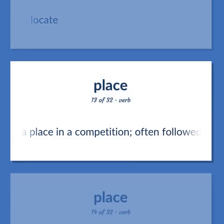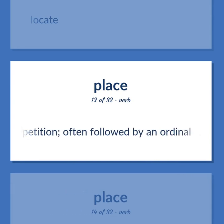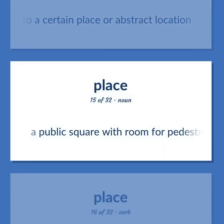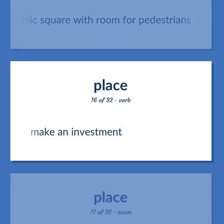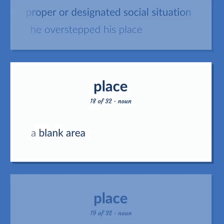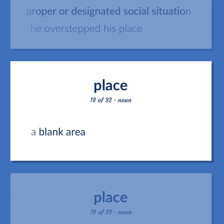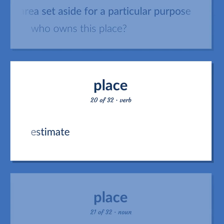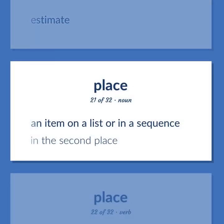Take a place in a competition, often followed by an ordinal. Put into a certain place or abstract location. A public square with room for pedestrians. Make an investment. Proper or designated social situation. Example: He overstepped his place. A blank area. Any area set aside for a particular purpose. Example: Who owns this place? Estimate. An item on a list or in a sequence. Example: In the second place.